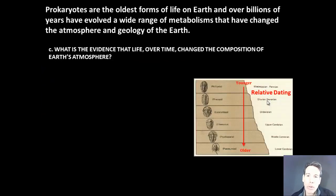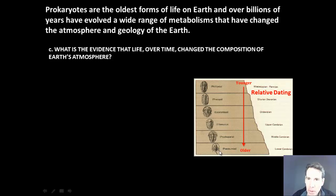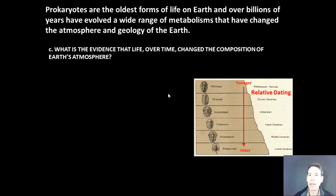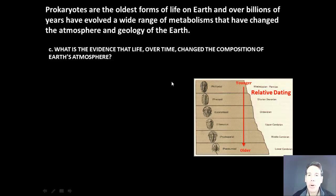One way we can determine the age of these fossils is through radiometric dating. This works on the idea that older rocks are on the bottom, being older than those on top. As organisms die, they get buried layer by layer in ocean sediments. Think of it like having 365 pairs of clothes: every day you throw a set into a pile, so the clothes on the very bottom are from 365 days ago, and those on top are the most recent. That is the basic principle of radiometric dating.